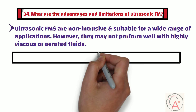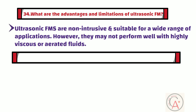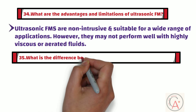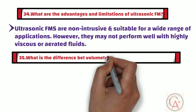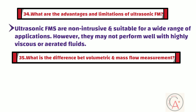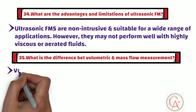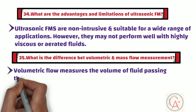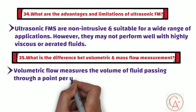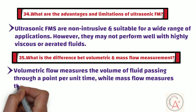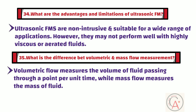The 35th question is: what is the difference between volumetric and mass flow measurement? Volumetric flow measures the volume of fluid passing through a point per unit of time, while mass flow measures the mass of fluid. Mass flow is often preferred because it is less affected by changes in temperature and pressure.